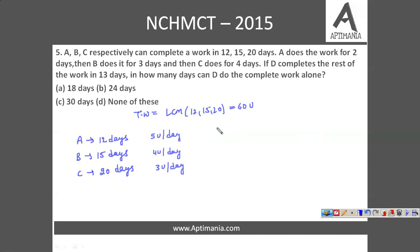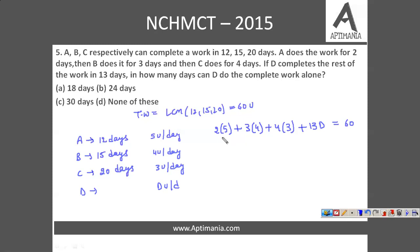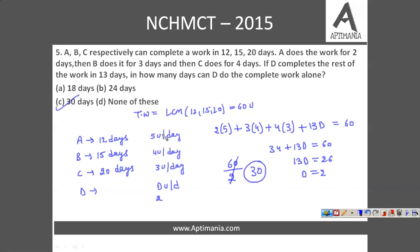A works for 2 days, filling 2×5 = 10 units. B works for 3 days, filling 3×4 = 12 units. C works for 4 days, filling 4×3 = 12 units. D completes the rest in 13 days. So 10 + 12 + 12 + 13D = 60, which gives 13D = 26, so D = 2 units per day. To find how many days D can do the complete work alone: total work is 60, so D requires 60/2 = 30 days. The correct answer is option C, that is 30 days.